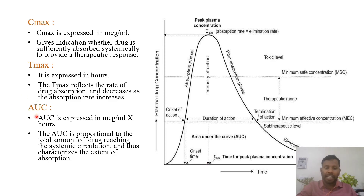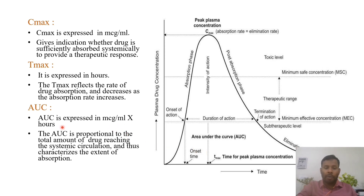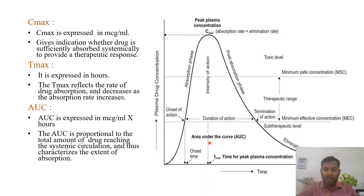Last pharmacokinetic parameter: AUC, area under the curve. The total area under the plasma concentration versus time curve is called area under the curve, AUC. It is expressed in microgram per ml times hour — the unit of Cmax multiplied by the unit of Tmax. This AUC will tell about the extent of drug absorption.